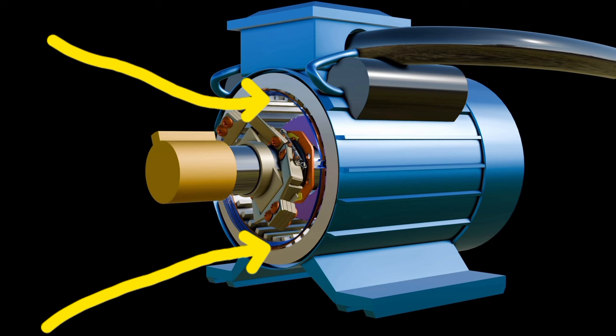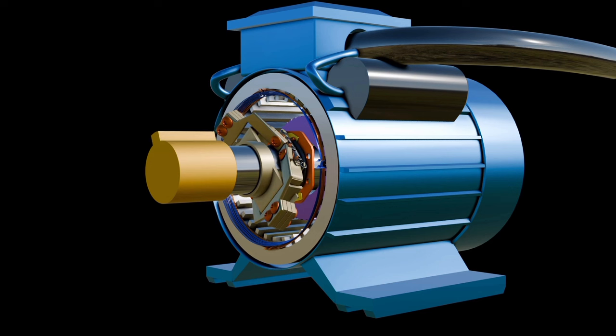In single-phase induction motors, there are two windings that are used except in shaded pole induction motors. Out of these two windings, one winding is the main winding and the other is auxiliary winding. The stator core is laminated to reduce the eddy current loss.